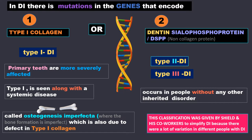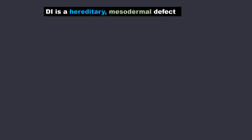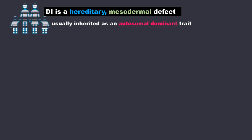In the newer classification only two types are considered as DI, becoming type 1 and type 2. If you are a student, follow whatever is being taught to you; this video is for understanding the concept and will continue with Shield's classification. DI is a hereditary mesodermal defect. It is inherited from parents and usually inherited as an autosomal dominant trait.